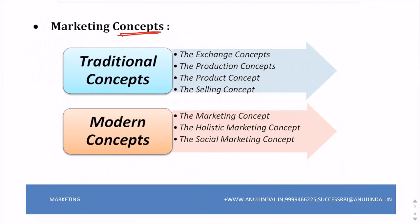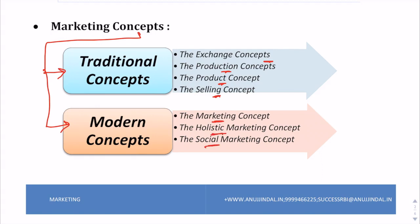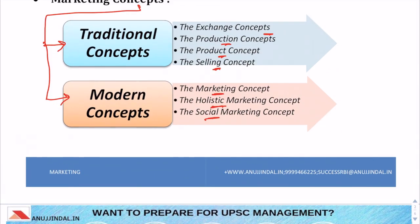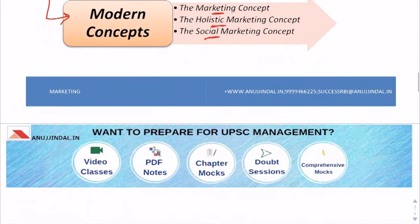Marketing concepts can be divided into two parts: traditional concepts and modern concepts. Under traditional concepts, we will study the exchange concept, the production concept, the product concept, and the selling concept. Under modern concepts, we will study the marketing concept, the holistic marketing concept, and the social marketing concept. Let us move forward and understand each of these concepts in further detail.